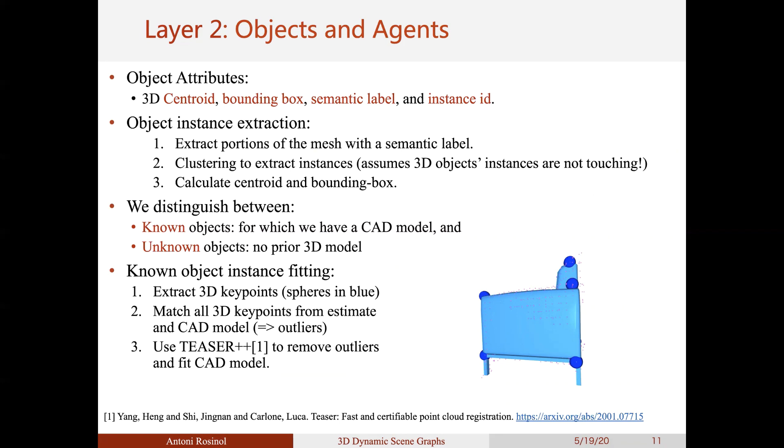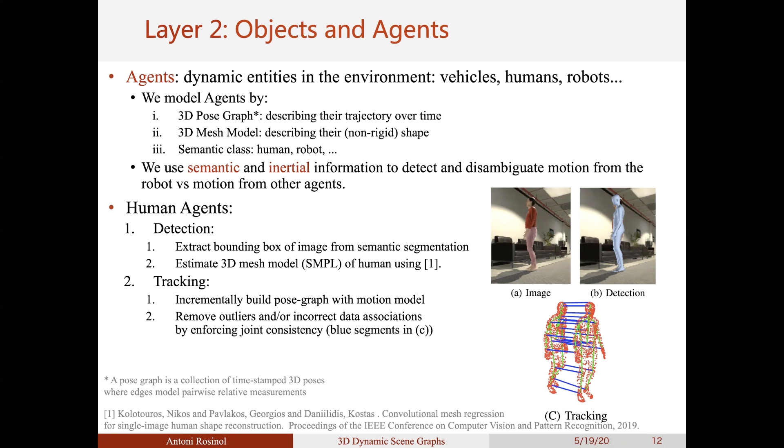Still in layer 2, we also model dynamic agents, such as humans, robots, and so on. For each agent in the scene, we built a 3D pose graph, which is a collection of timestamped 3D poses where edges model pairwise relative measurements. A 3D mesh model describing the potential in non-rigid shape over time, and a semantic label.